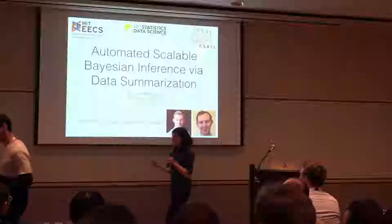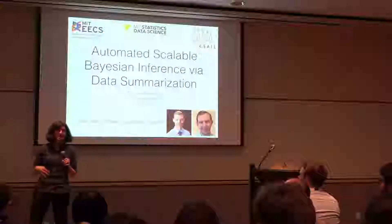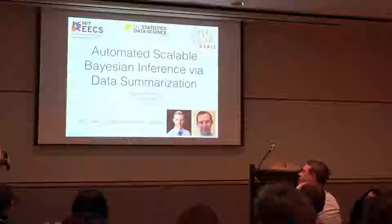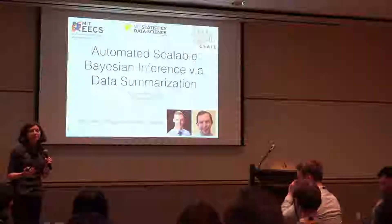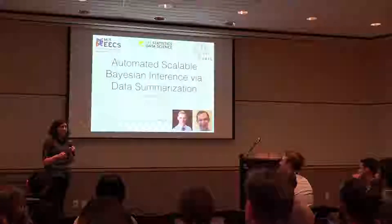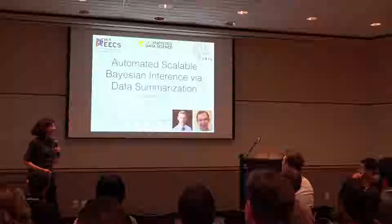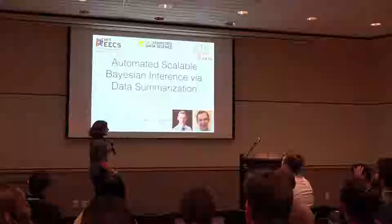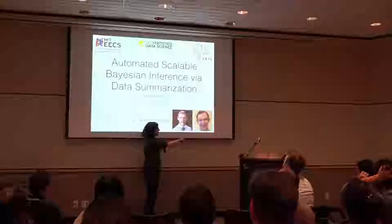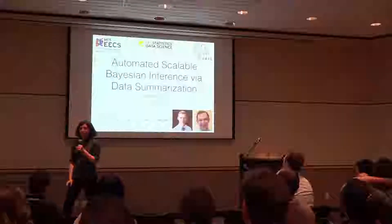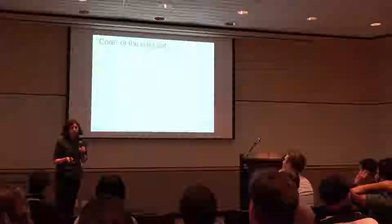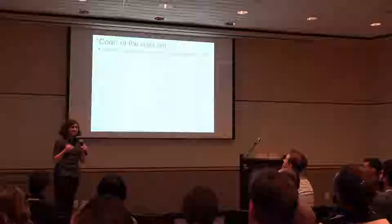Today I'll be talking about how we can summarize our data as a pre-processing step before running our approximate Bayesian inference algorithms, in order to get methods that are fast but also have theoretical guarantees on the quantities that practitioners are interested in. This is work with my graduated postdoc Trevor Campbell, now faculty at UBC, and my graduated PhD student Jonathan Huggins, now a postdoc at Harvard Biostatistics.